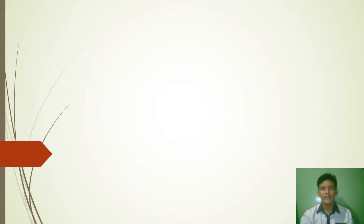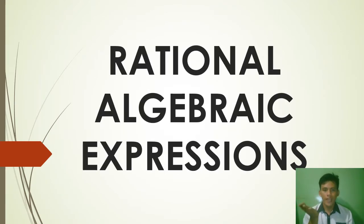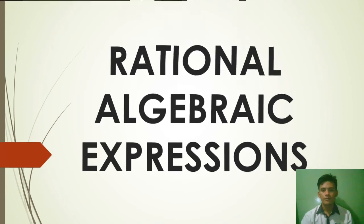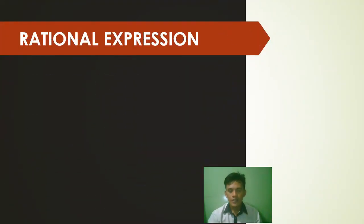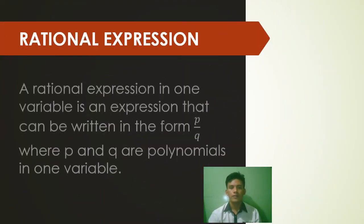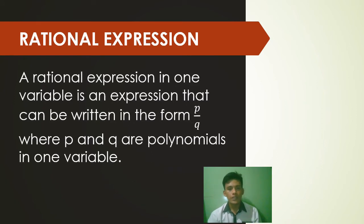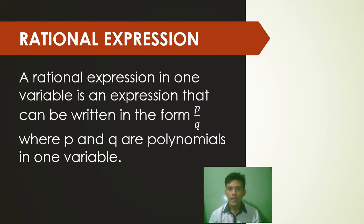In this topic, I will discuss Rational Algebraic Expressions. A rational expression in one variable is an expression that can be written in the form of P over Q, where P and Q are polynomials in one variable.